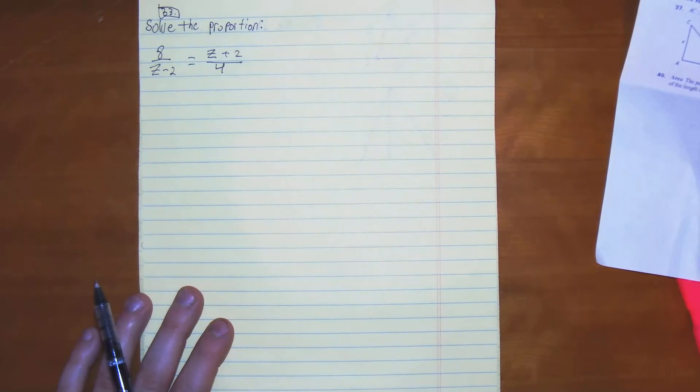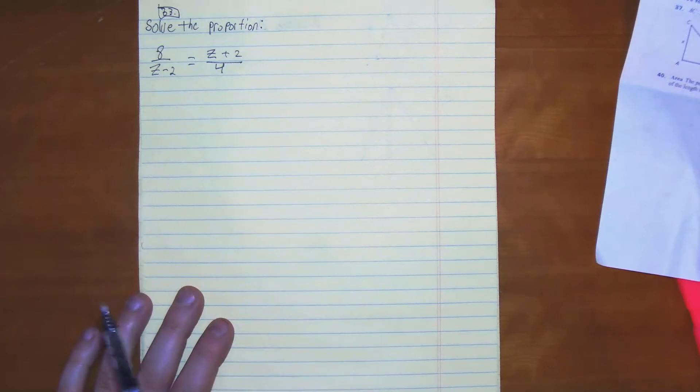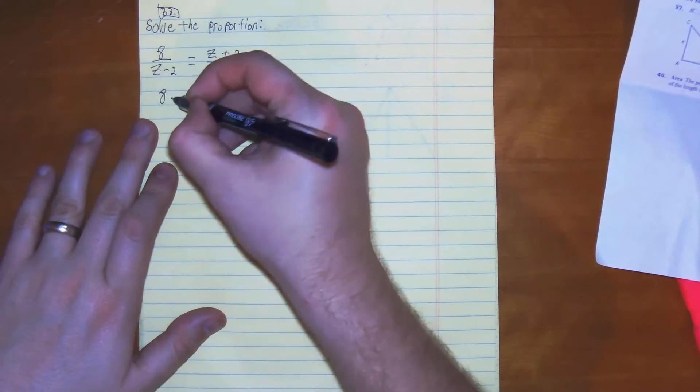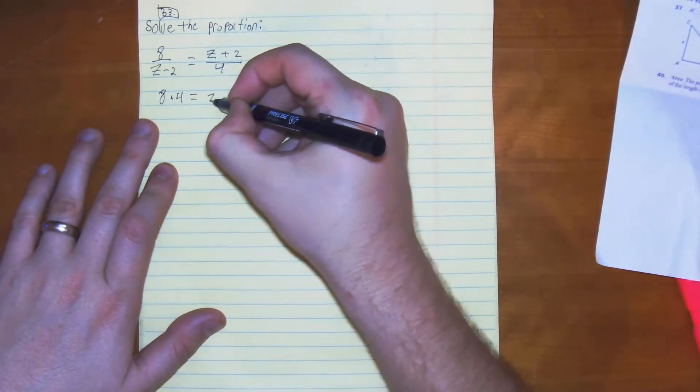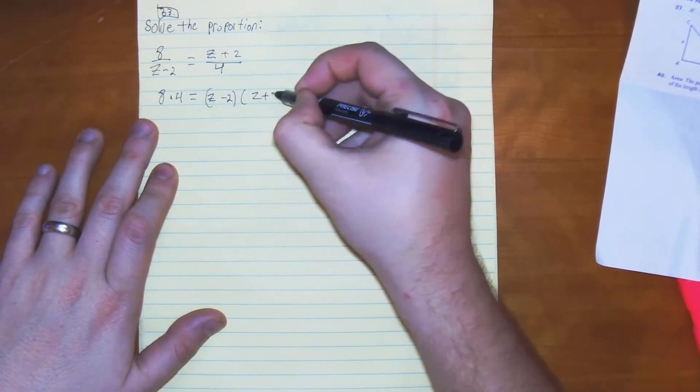What we need to do is use the cross product rule. Multiply 8 by 4 and z minus 2 by z plus 2. So the way we're going to get our answer is cross multiply. We get 8 times 4 is equal to z minus 2 times z plus 2.